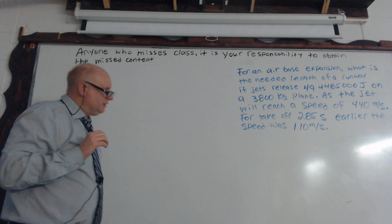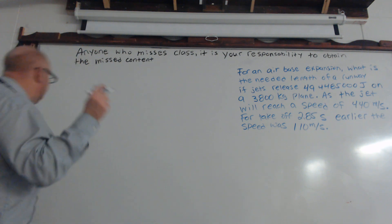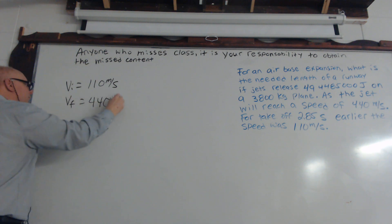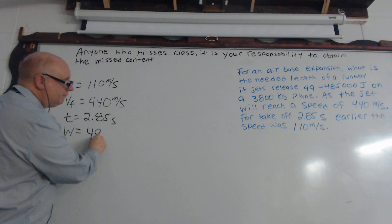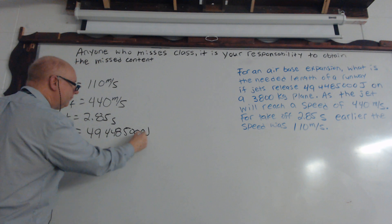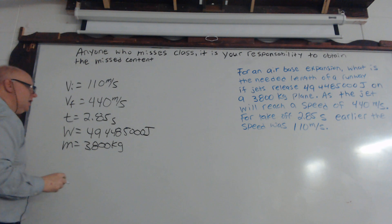So I think we had mentioned, probably for the 33rd time now, you've read the problem. So what do we know in this problem? Your initial velocity is 110, your final velocity is 440, your time is 2.85, your work is 494 related to 440, whatever that big number is.